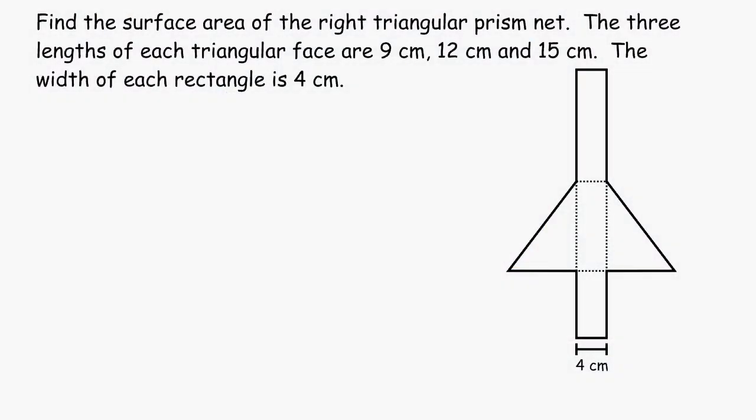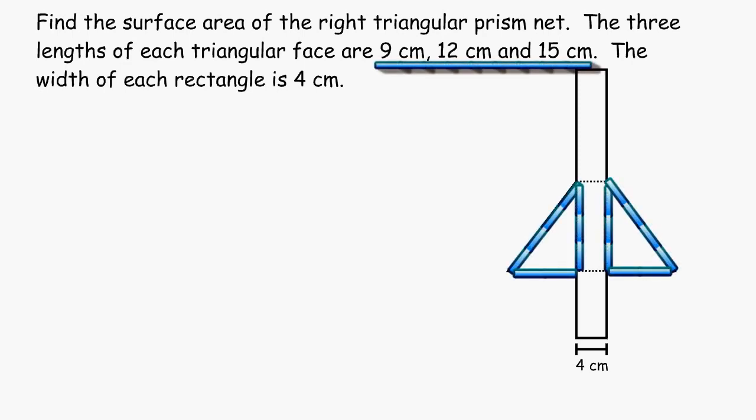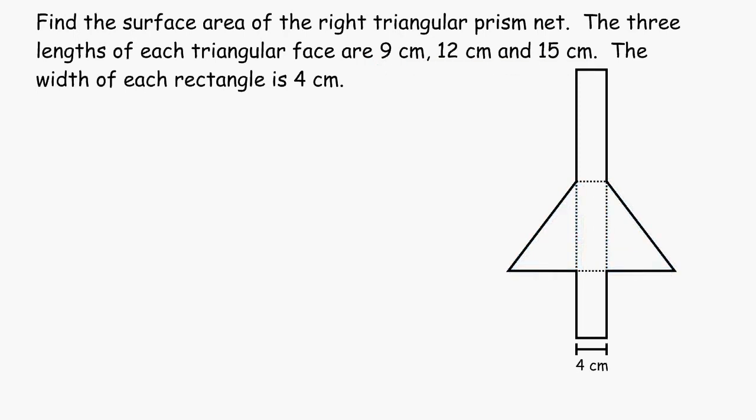In this math tutorial, we are going to practice finding the surface area of a right triangular prism. It is given in the problem that the three lengths of each triangular face are 9, 12, and 15 centimeters. It is also given that the width of each rectangle is 4 centimeters.